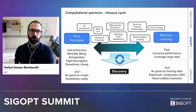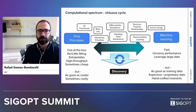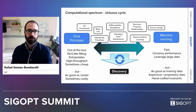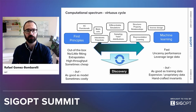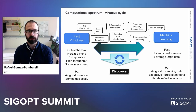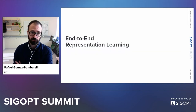Our group works precisely in this continuum — in this line that connects first principles to machine learning, trying to mix them in the most effective way so they feed off each other. We increase the robustness of machine learning and reduce its data needs through first principles.